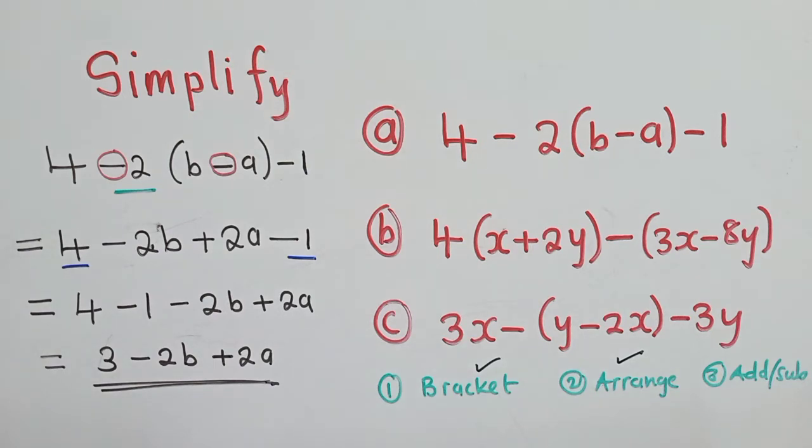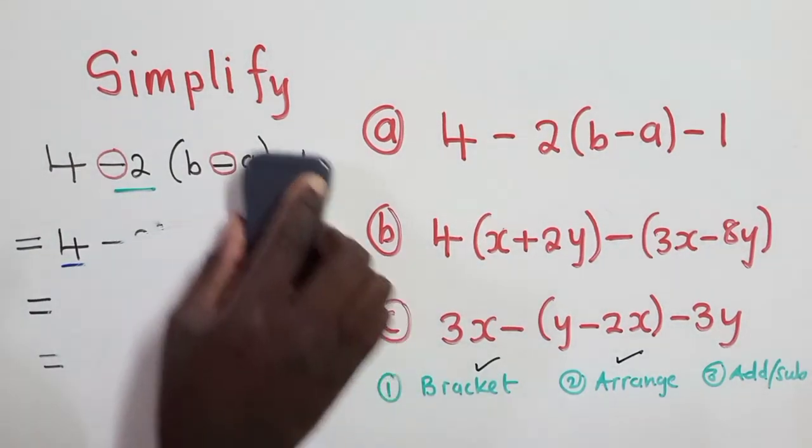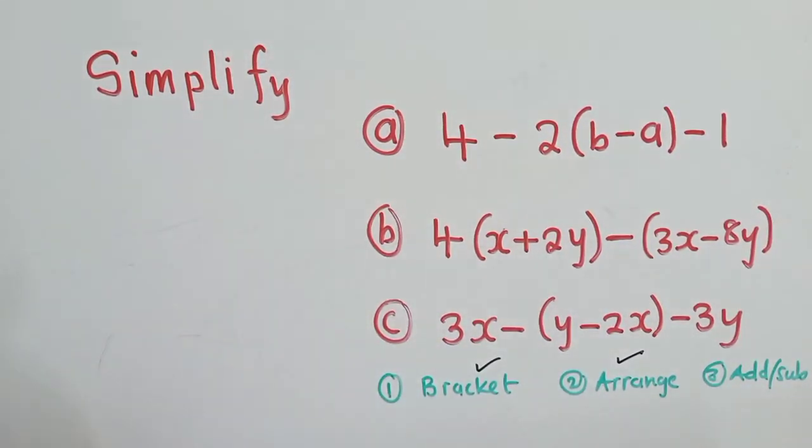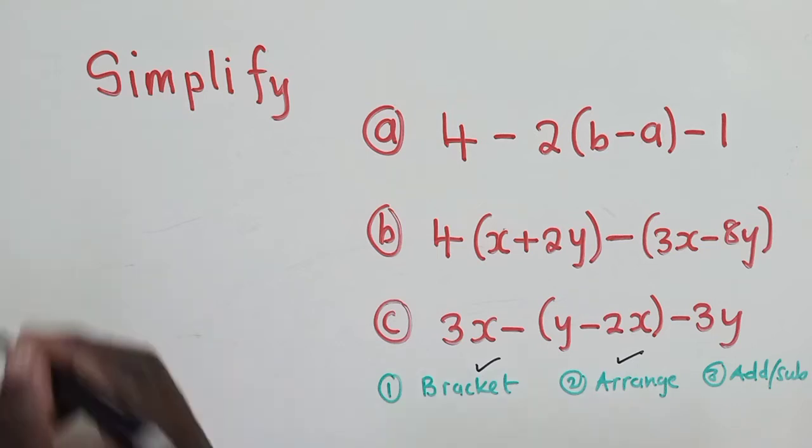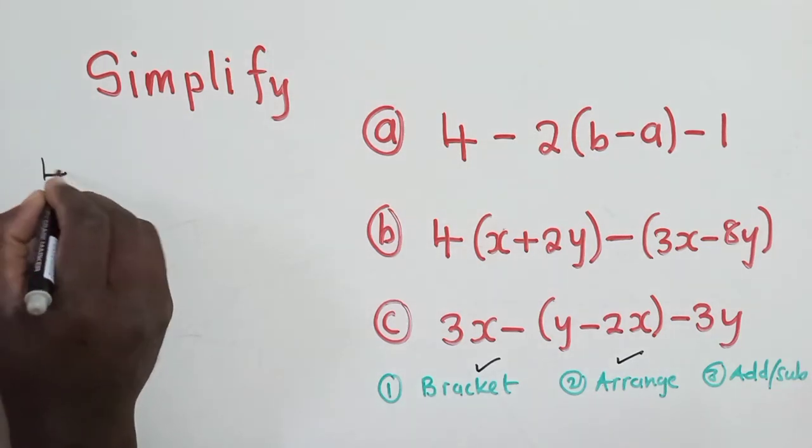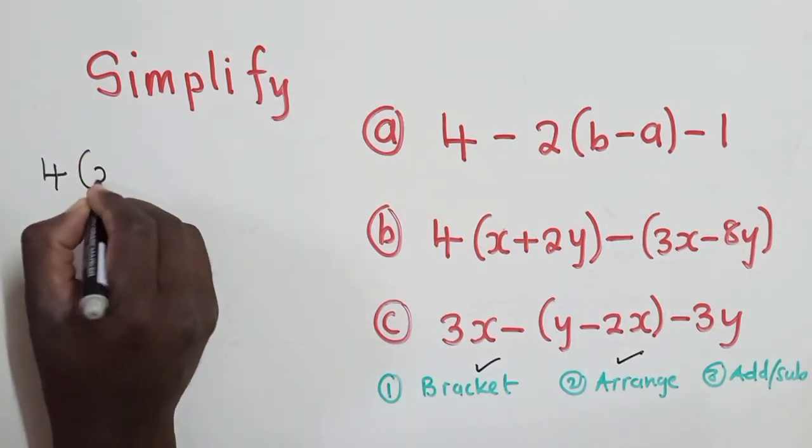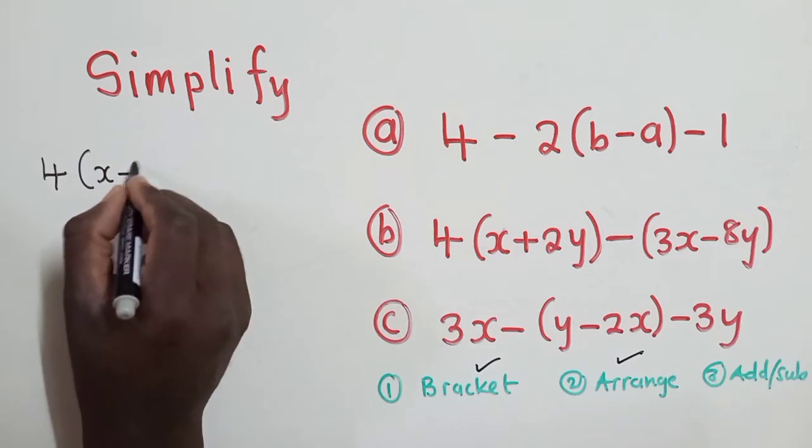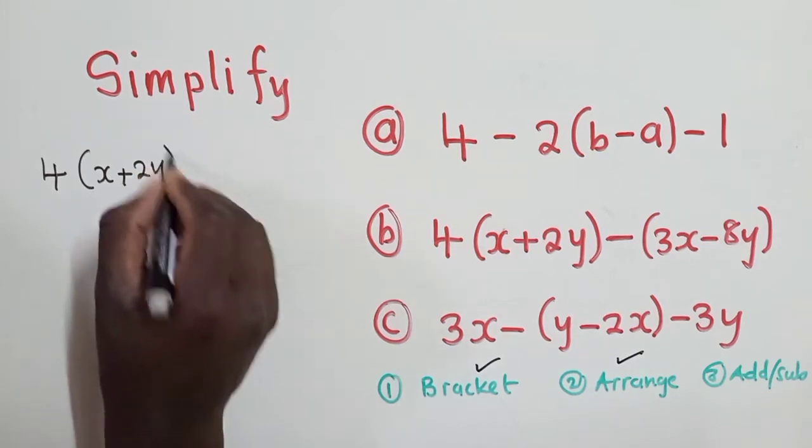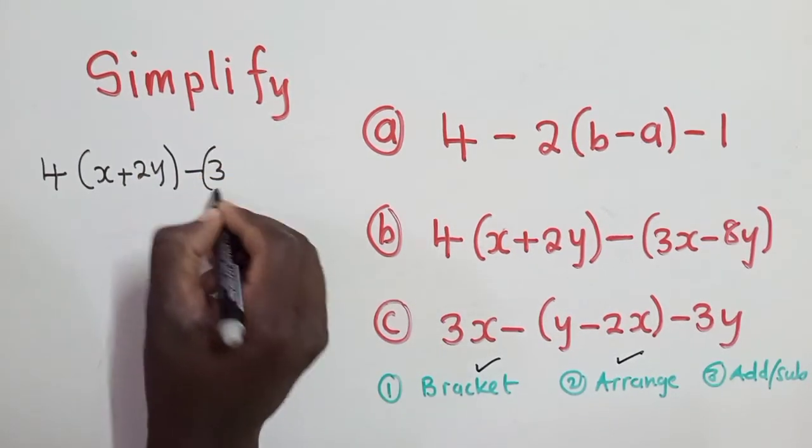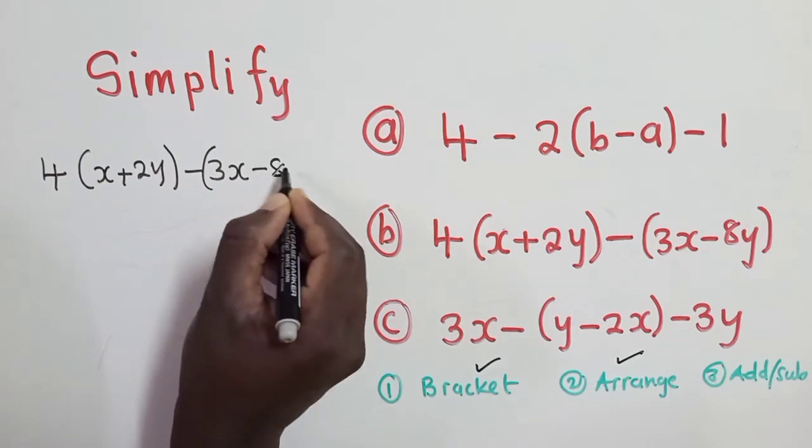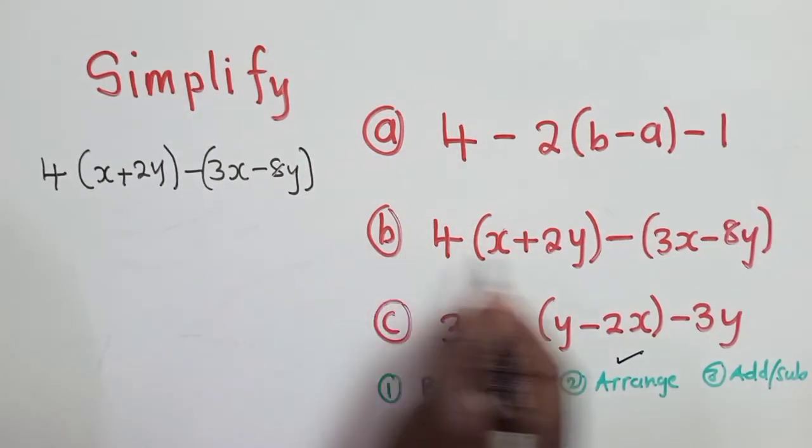So now we go to the next question. Question b. For question b, we need to also apply the same rules. So we have 4 plus (x + 2y), sub plus actually 2y, minus (3x minus 8y). So this is question b.